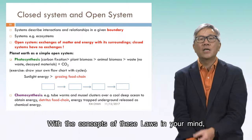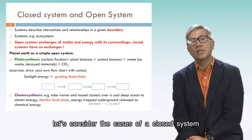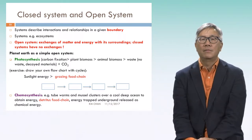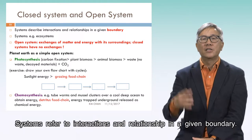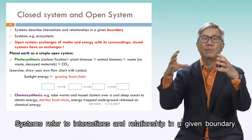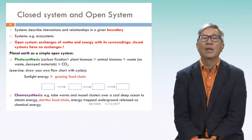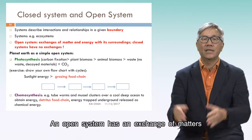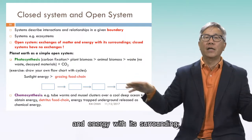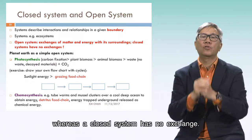With the concepts of these laws in mind, let's consider the cases of a closed system and an open system. Systems refer to interactions and relationships within a given boundary. A system could be an ecosystem. An open system has an exchange of matter and energy with its surroundings, whereas a closed system has no exchange.